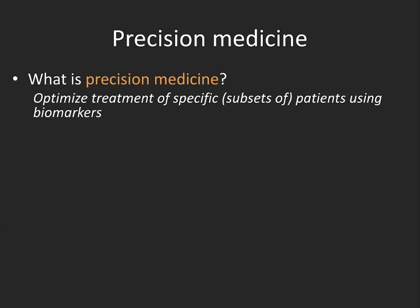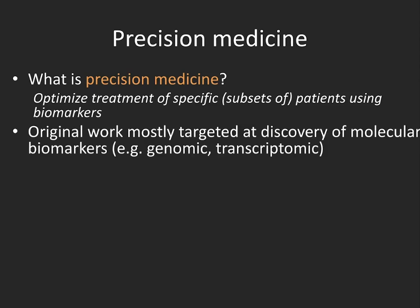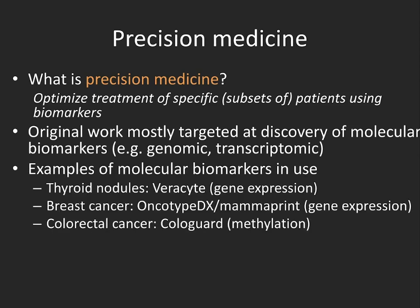What do I mean with precision medicine? Essentially, to optimize treatment of specific patients or subsets of patients using biomarkers. Original work in precision medicine has been mostly targeted at discovery of molecular biomarkers, primarily genomic and transcriptomic biomarkers.